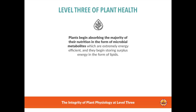We now know that plants have the capacity to absorb molecules from the soil profile up to a molecular weight of about one thousand — relatively large complex compounds including enzymes, proteins, amino acids, and peptides. When plants begin absorbing these microbial metabolites, they are absorbing the equivalent of prefabricated parts, allowing them to be very energy-efficient. They then begin storing that surplus energy in the form of lipids, fats, and oils.